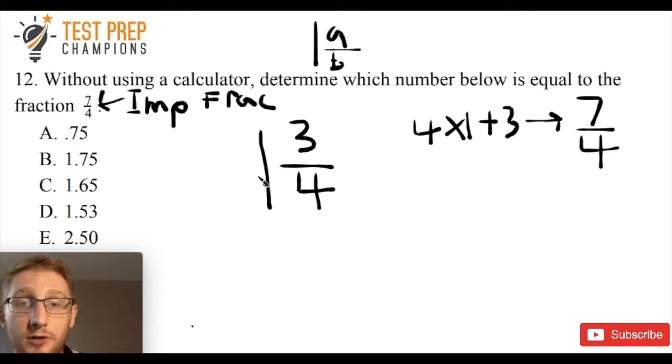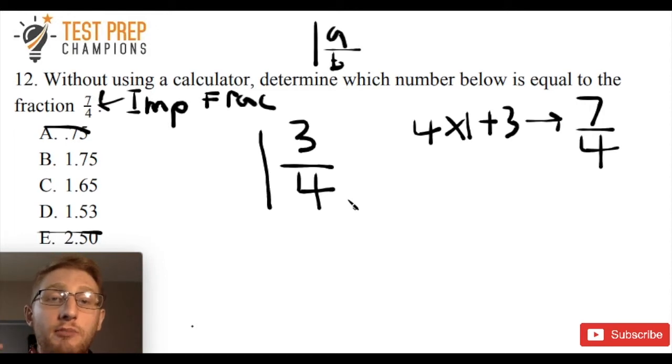So we now have 1 and 3 fourths. Okay, so we can cross off 0.75, cross off 2.50. And so hopefully you know, because I did a video on this earlier in the series, that 3 out of 4 is equal to 0.75. If you have a calculator handy, you can always do 3 divided by 4, and that's going to give you 0.75. If not, you just want to memorize that.